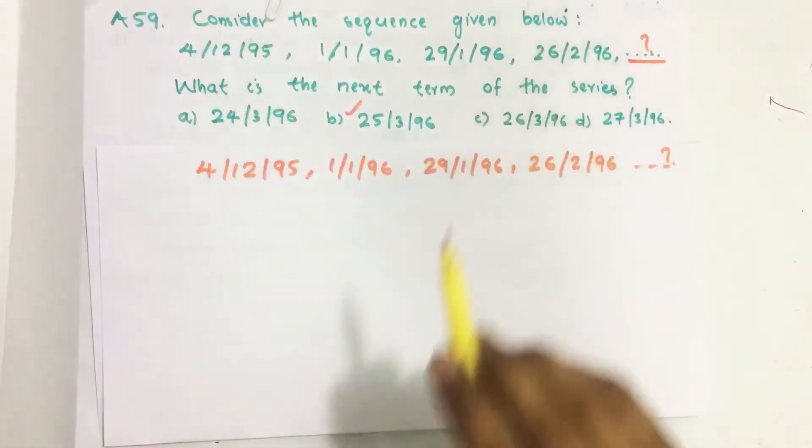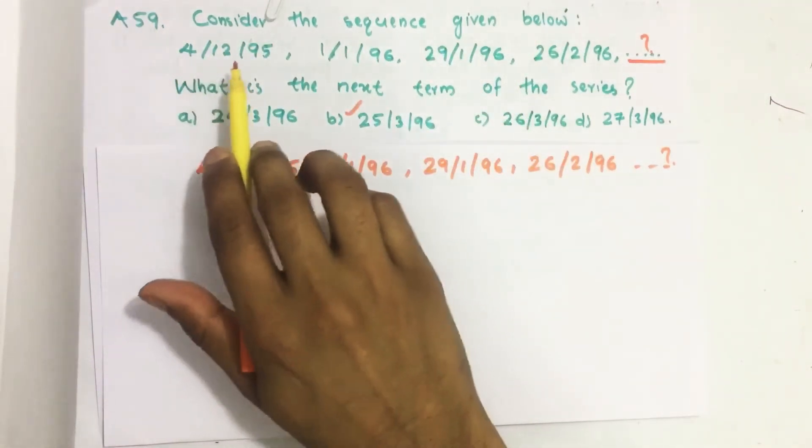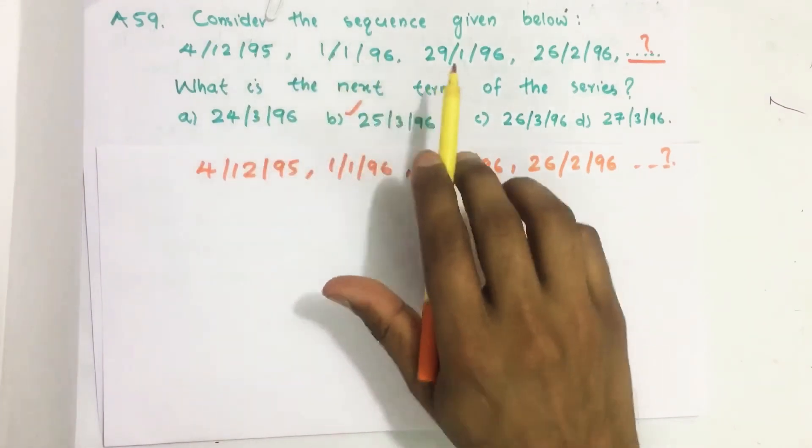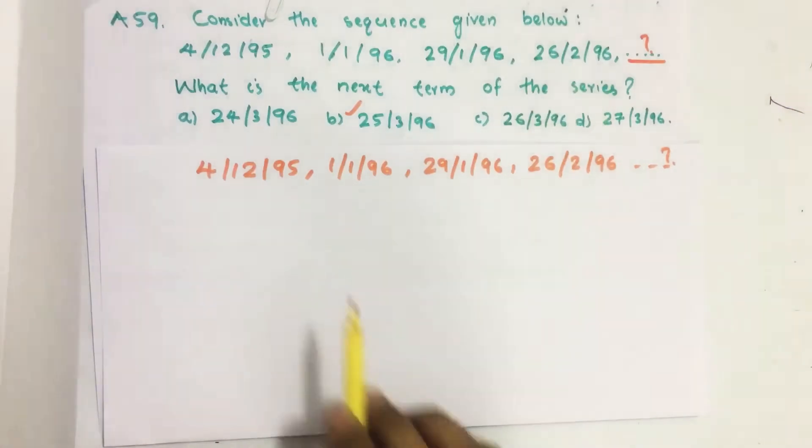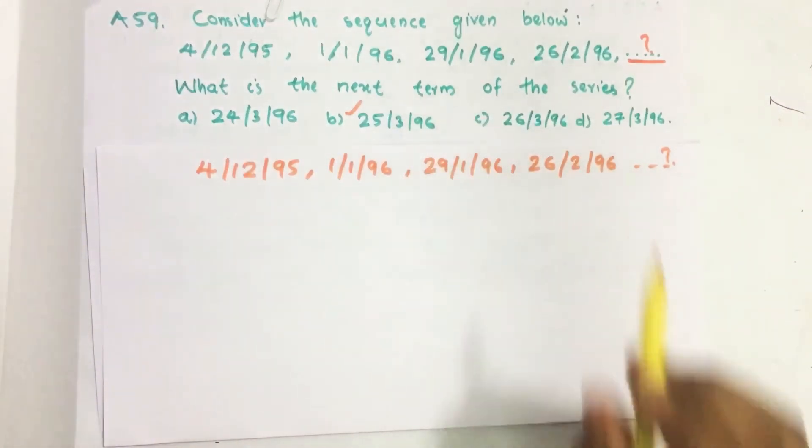Consider the sequence given below: 4, 12, 95, 1, 1, 96, 29, 1, 96, 26, 2, 96. What is the next term of the series?